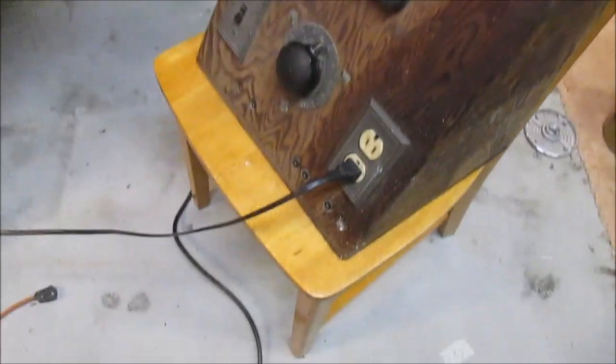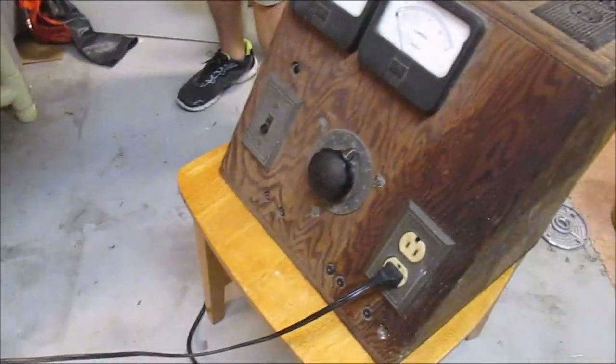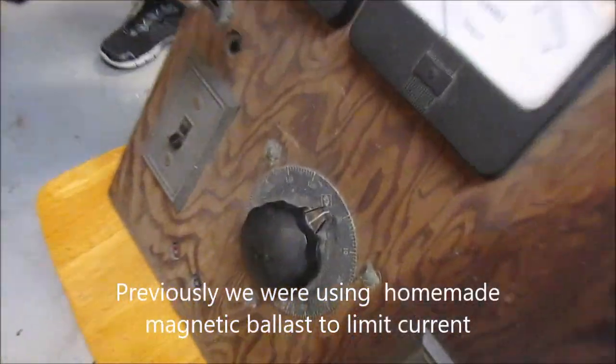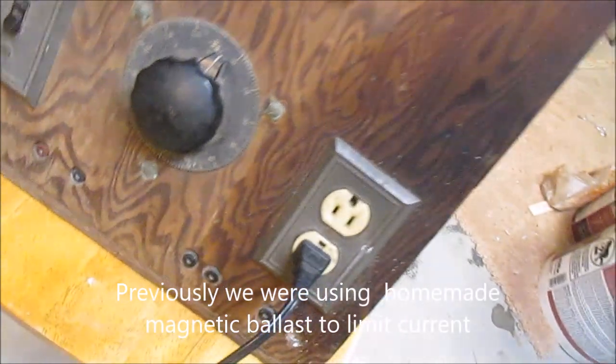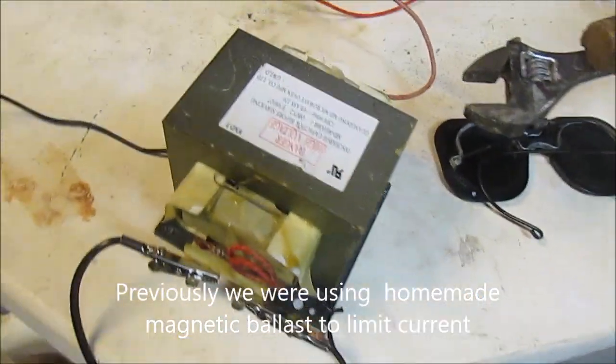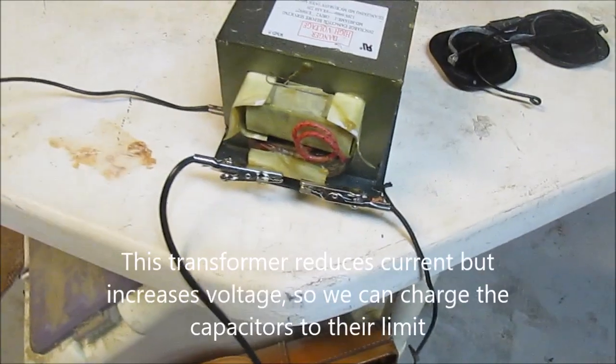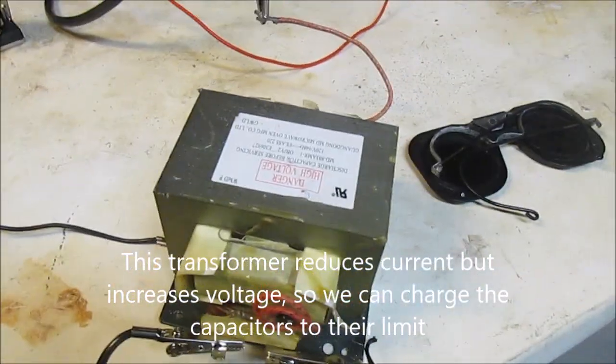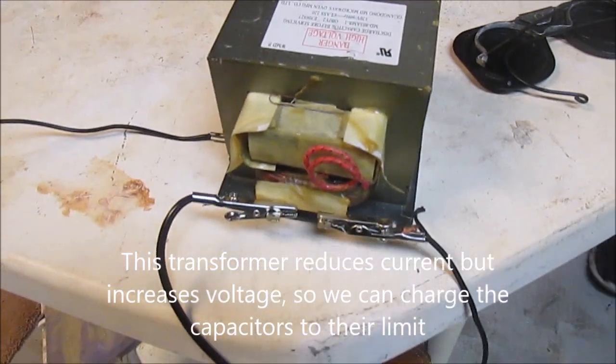Alright, so we changed the setup. We were only getting up to 100 volts even when we extended the voltage all the way to the max, which is 120 on this. So now we have a microwave oven transformer hooked up in line, so what this should do is increase the voltage we're getting out of it to higher levels.